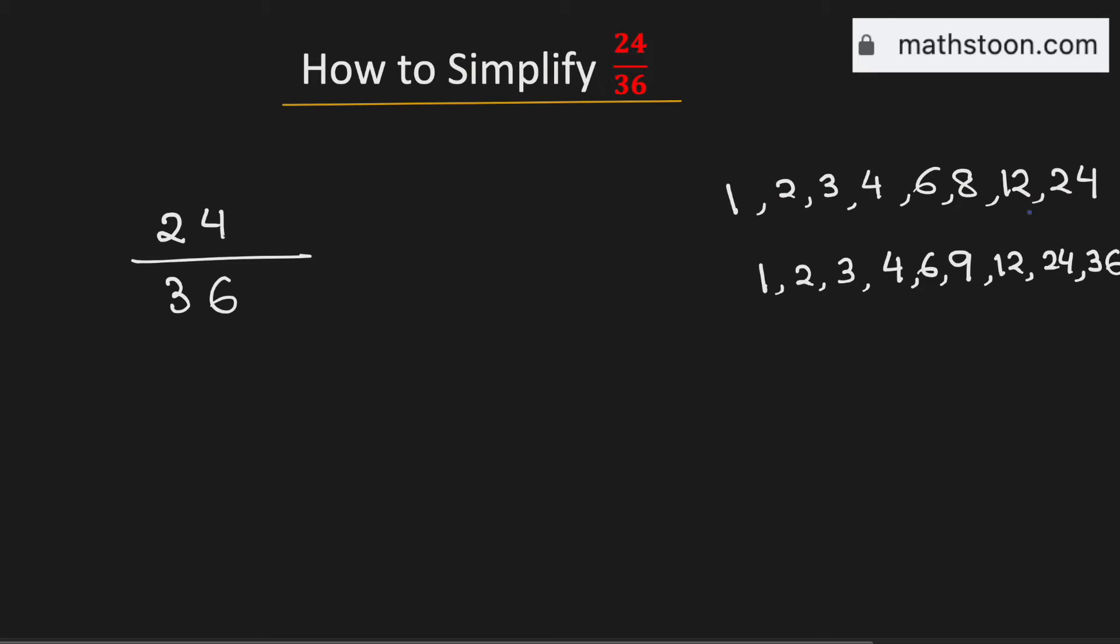Now see that among these numbers 12 is the greatest one which is common in these two lists. Therefore the greatest common factor of 24 and 36 is equal to 12.